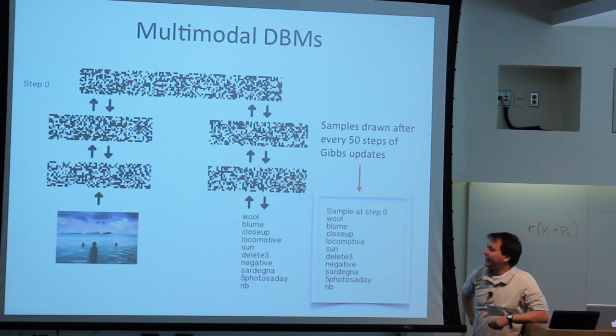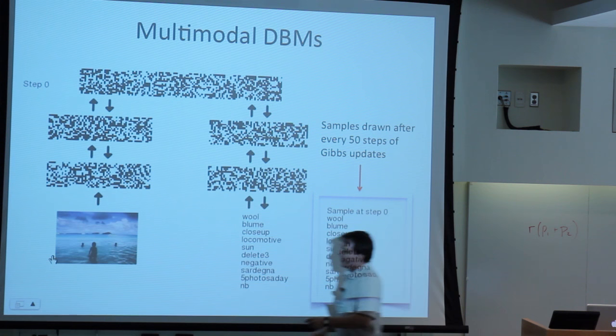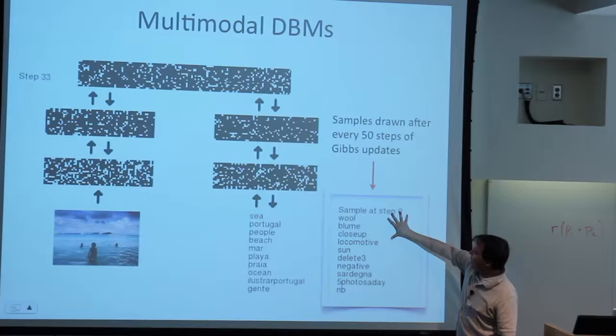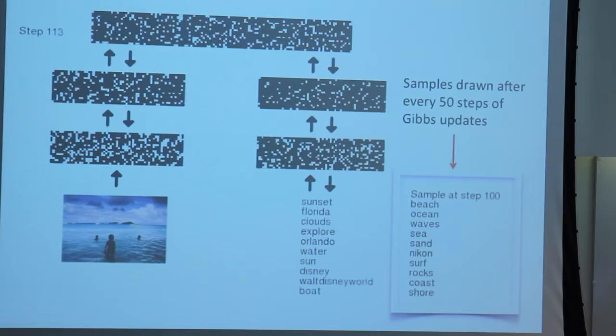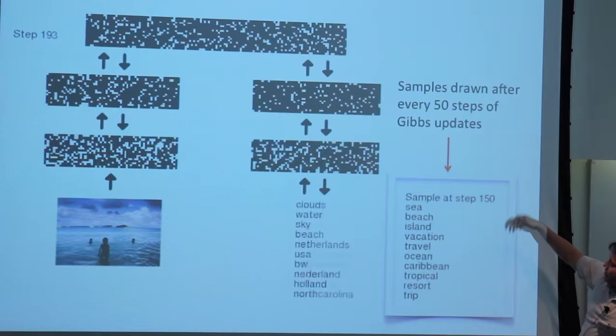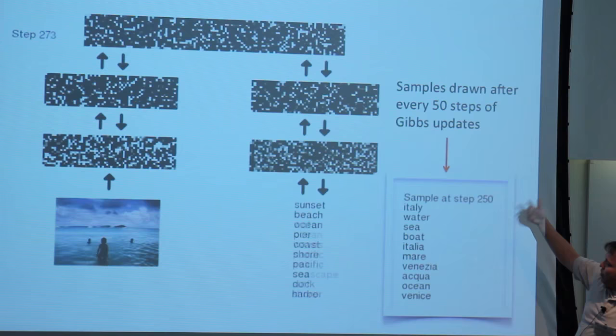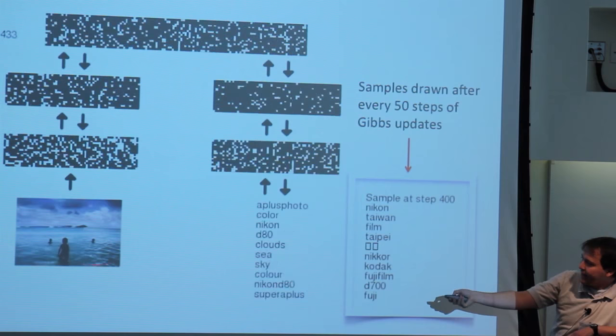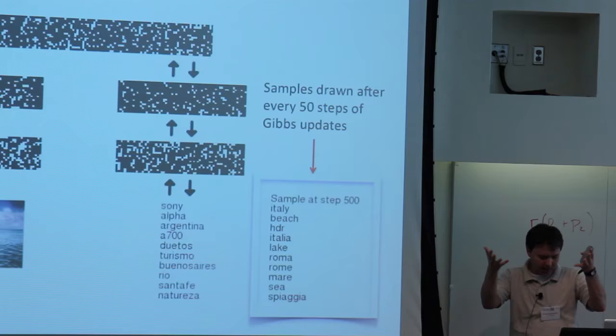Finally, here's one example: I condition on the image and, because this is a generative model, generate the distribution of words. This is a Markov chain Monte Carlo running — it's trying to explain what it sees. It generates: 'sea, beach, island, vacation, travel, ocean, water, Canada, BC, British Columbia, Italy, water, sea, boat, Italia, sea, sky, blue, urban.' It goes through different regions of that space with multiple alternative explanations for what's in the image — only possible because we're building a generative model. Thank you.